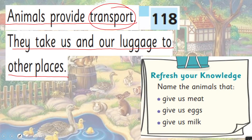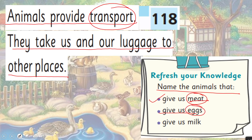So quickly, let's review your animals. Name the animals that give us meat — hen, cow, goat, and sheep all give us meat. Which animals give us eggs? Hens. Very good. Which animals give us milk? Goat, buffalo, and cow — they give us milk.